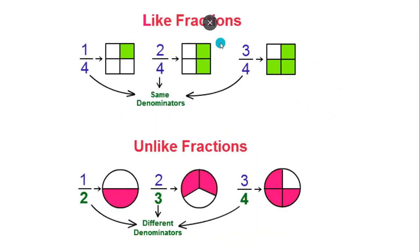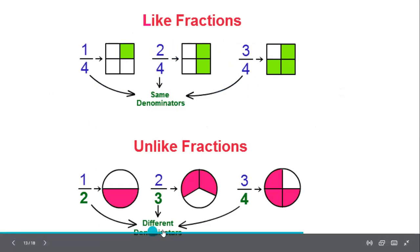Like fractions — if we have the same denominators, then those fractions are called like fractions. If the denominators are different, they are called unlike fractions.